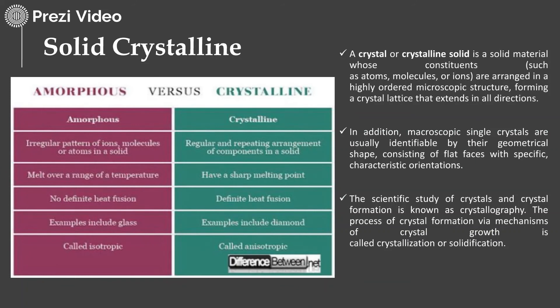We now move on to solid crystalline substances. In the pre-formulation series you can understand the difference between amorphous and crystalline substances. Crystalline substances are recognized by their highly regular, repeated arrangement of molecules in a properly aligned structure, whereas amorphous substances are recognized by an irregular pattern of ions, molecules or atoms. Crystalline substances have a very sharp melting point — for example diamond — and are also called anisotropic in nature, whereas amorphous substances melt over a range of temperatures, the classic example being glass. Amorphous substances are also known as isotropic.